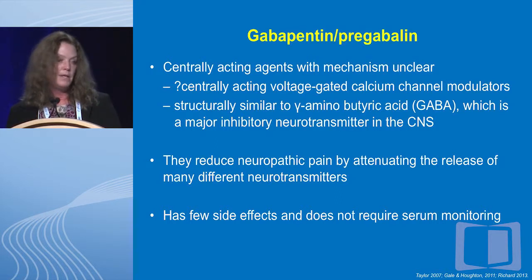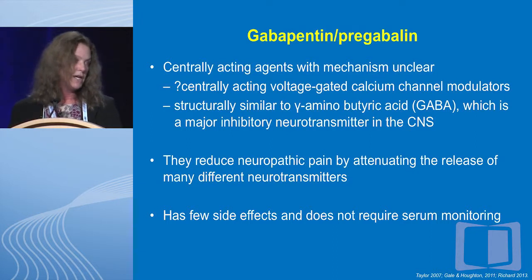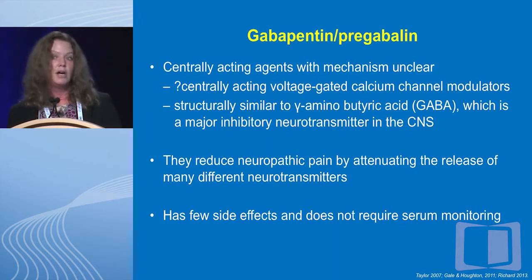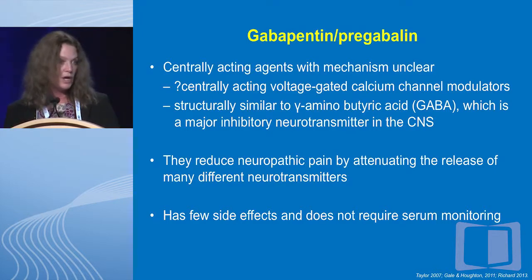Gabapentin and pregabalin have historically been used for neuropathic pain, and their mechanism is not fully understood. Recent studies in fibromyalgia show they actually change metabolism in the brain. The important thing to know about this class of medication is it takes three to four months to see an effect — not weeks.